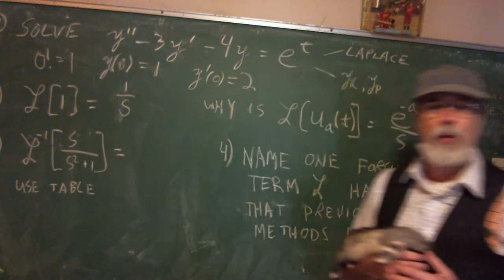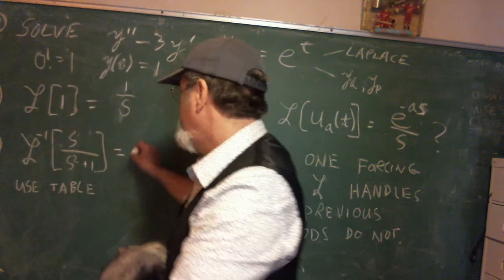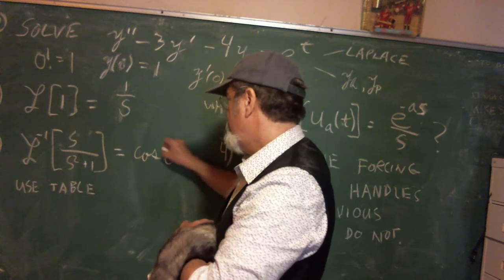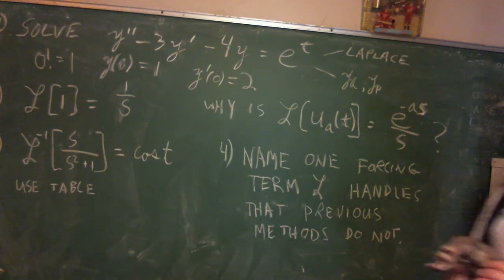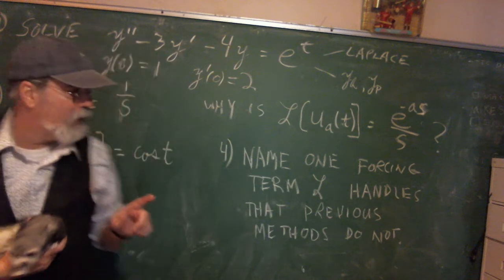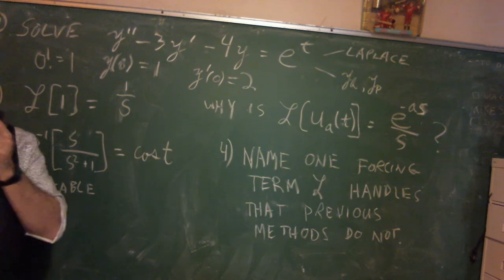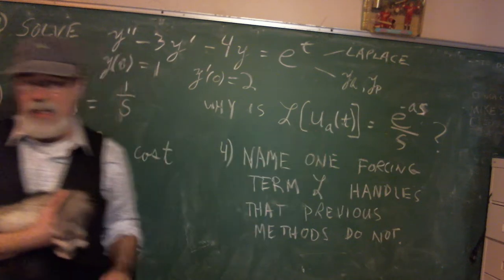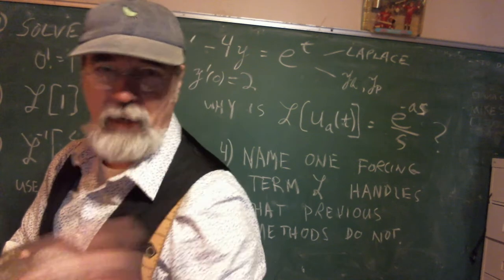You should all be able to use the table on something simple. The only tricky part is you've got to make sure you're looking at something with S in it. On the table, the thing that has S on the top is cosine, and this has to be omega squared — one squared is one. So this is just cosine of T; it's the inverse Laplace transform using the table. Can you name one forcing term that the Laplace transform handles that other methods don't? The answer is the Heaviside function. And now we're going to see another thing the Laplace transform handles that regular old methods wouldn't handle.